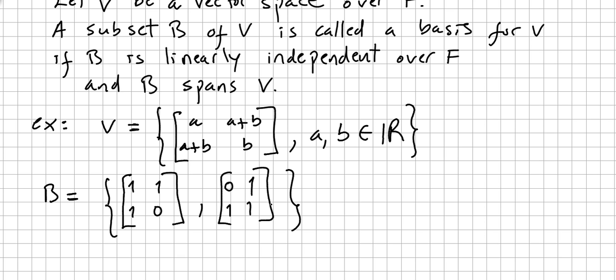We are going to see this example. We have a vector space V where the matrices are in the form [a, a+b; a+b, b], so it's a vector space over the field of the reals, where a and b are in the reals. So we claim that B, you can see that easily, that B is a subset of V, right,